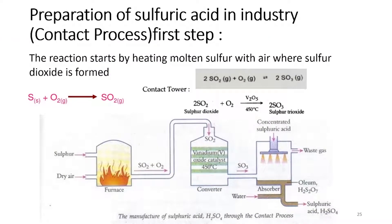For the preparation of sulfuric acid in industry, we use the contact process. The reaction starts by heating molten sulfur, S, with air containing oxygen gas, O2, where sulfur dioxide, SO2, is formed. In the contact tower, the formed sulfur dioxide, SO2, is further oxidized into sulfur trioxide, SO3, in the presence of vanadium as a catalyst.